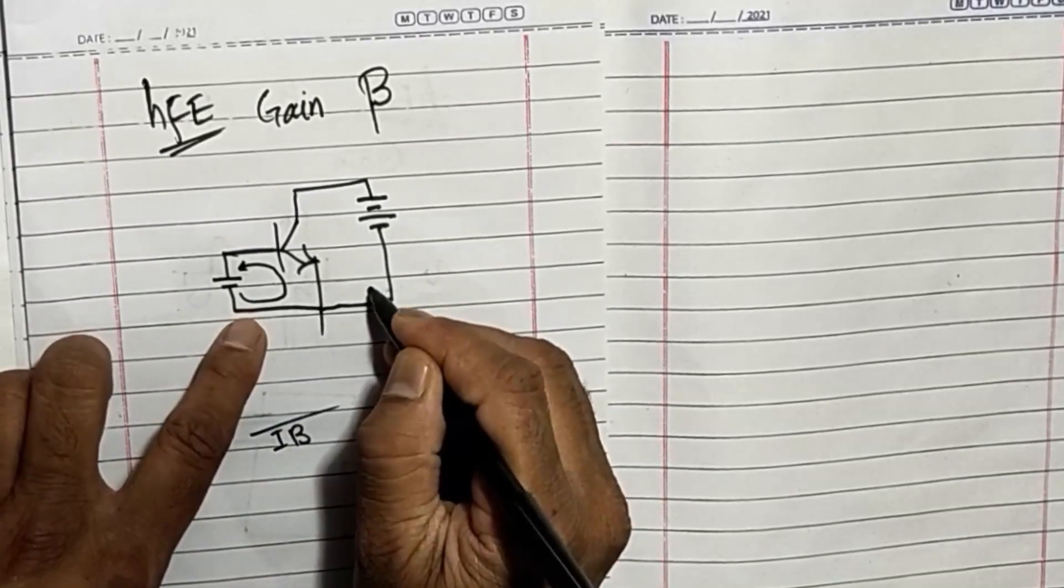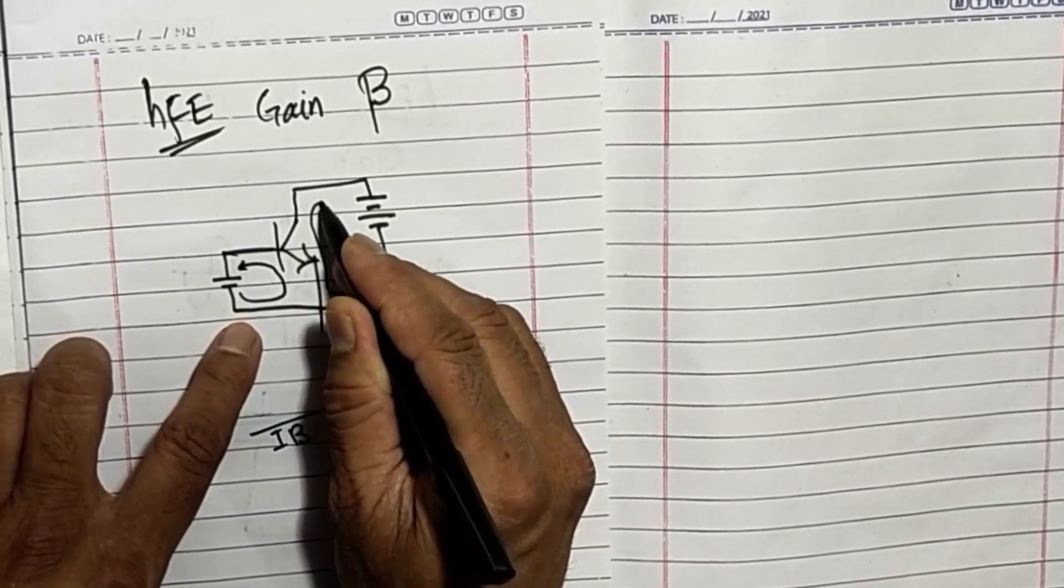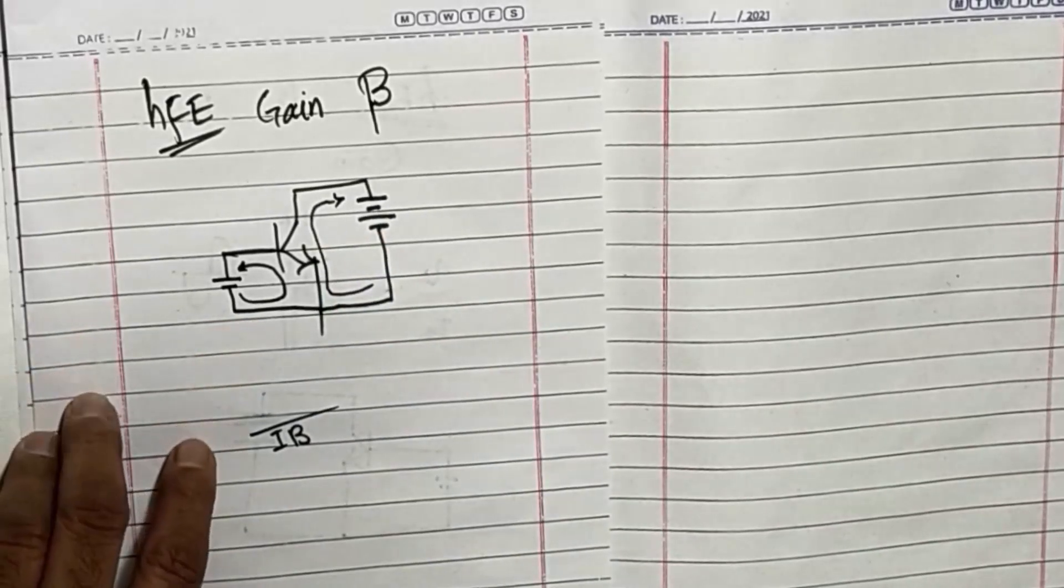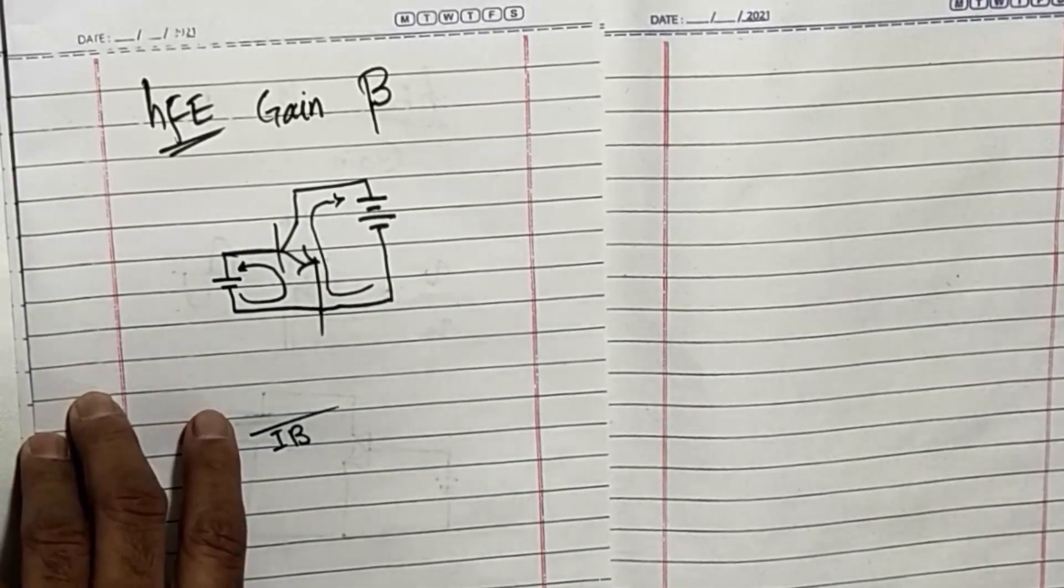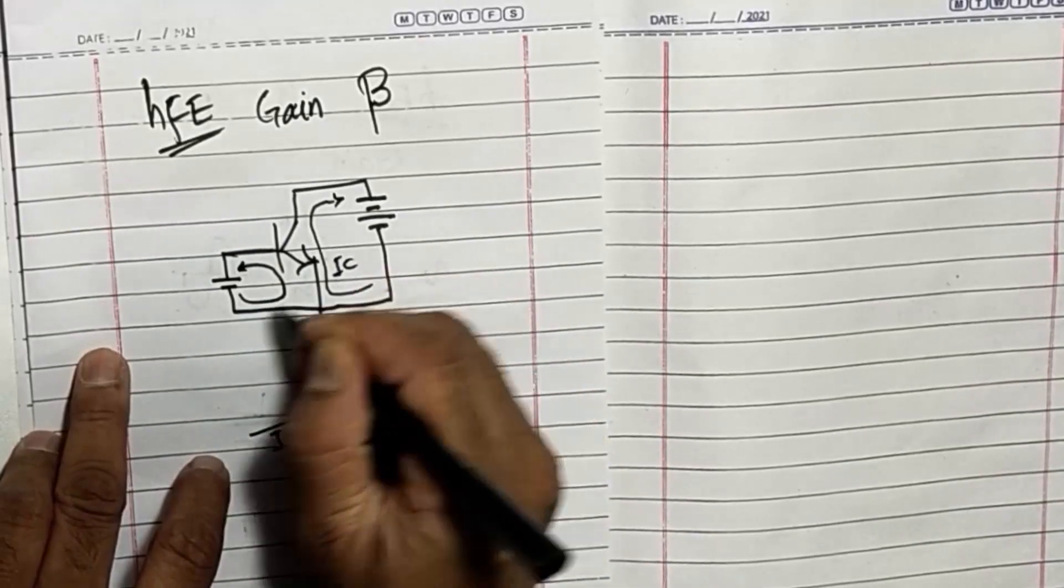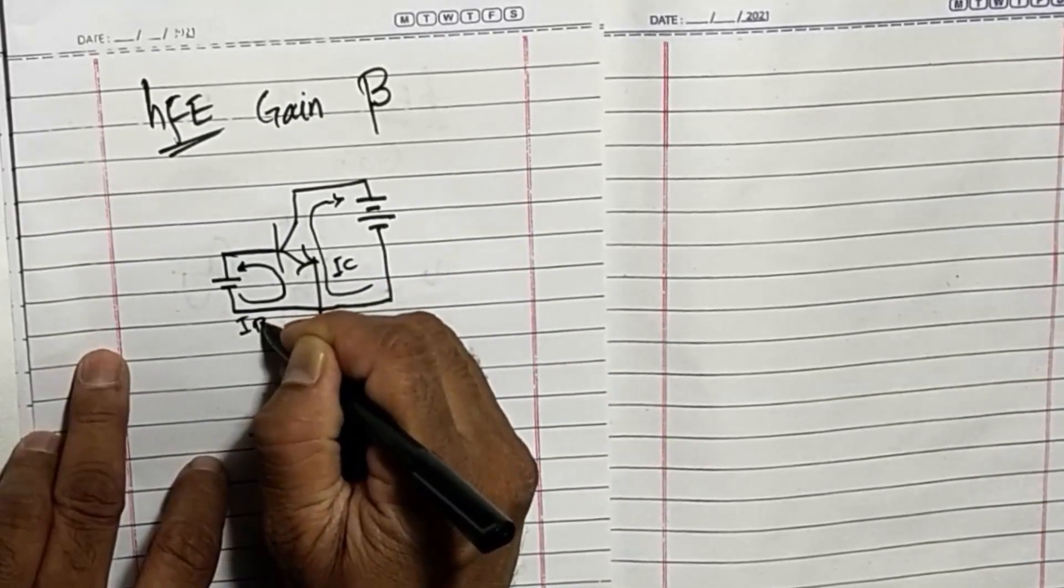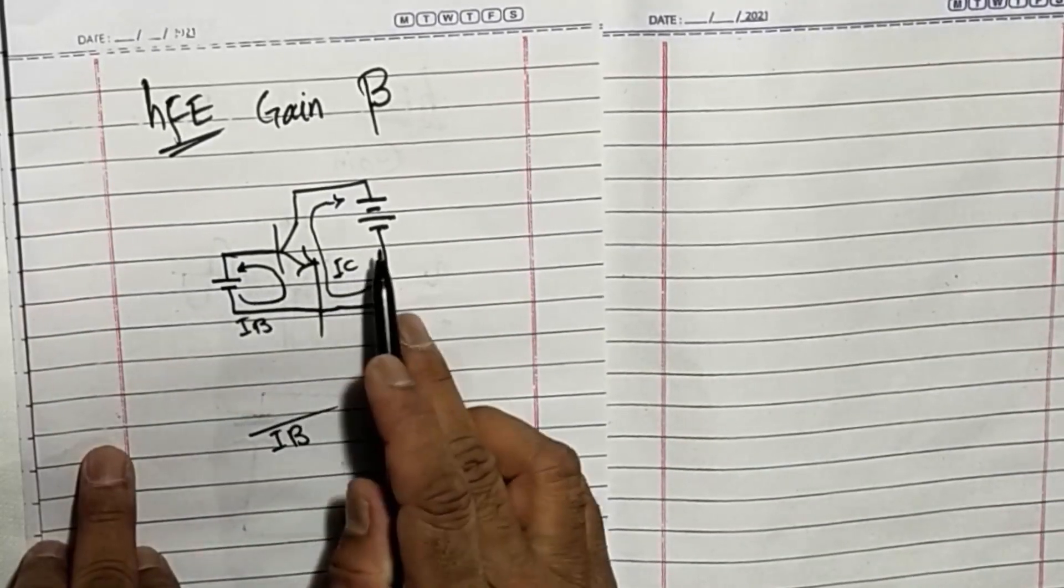This base current will also cause a current to flow from emitter to collector. That is called collector current, IC. Here is IB.